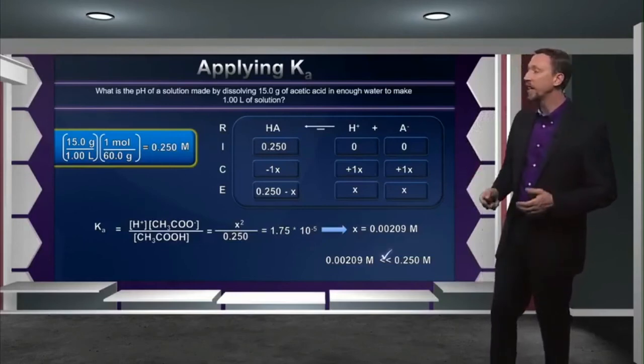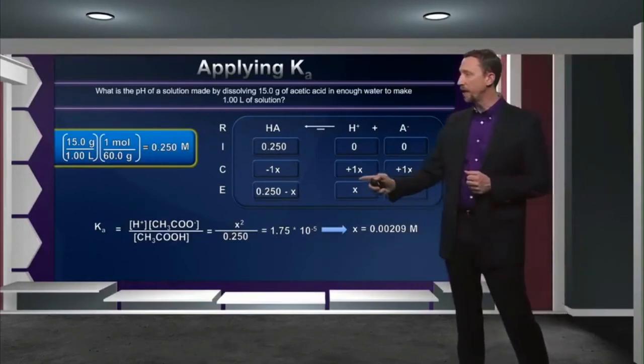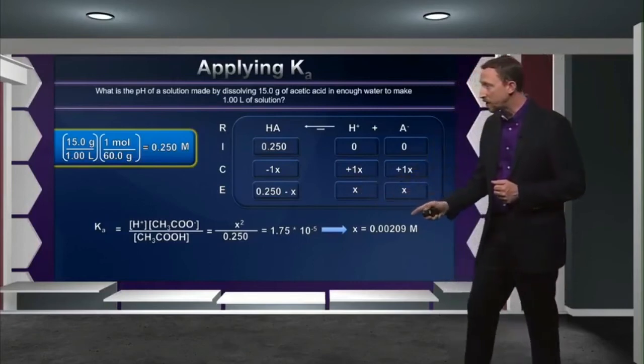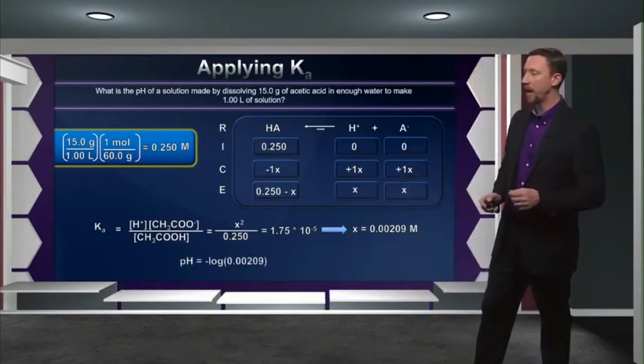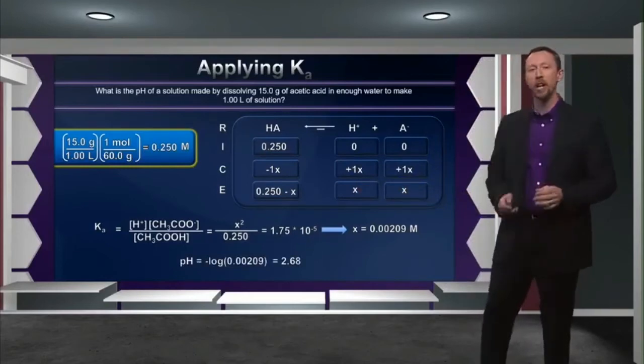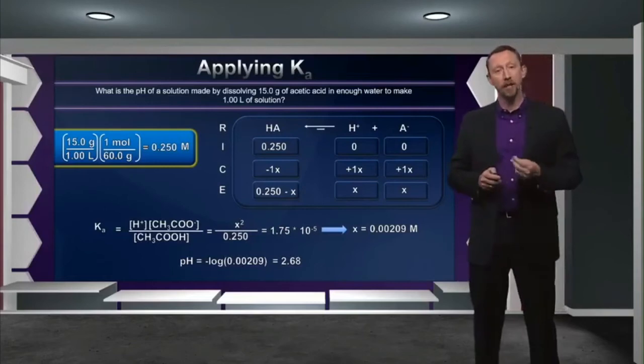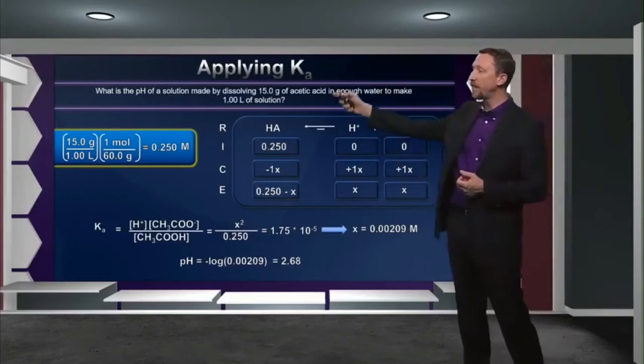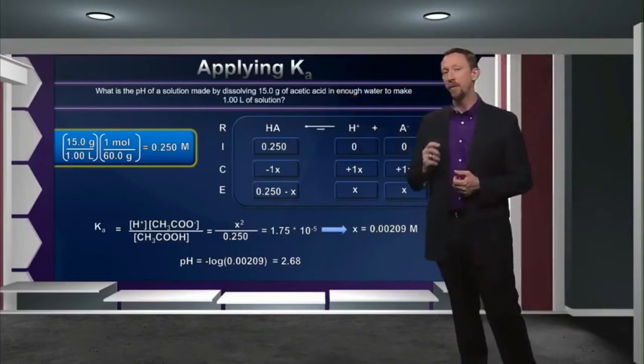The proton concentration X equals 0.00209 molar. Taking the negative log of that number gives us the pH of our final solution: 2.68 is the pH expected when we dissolve 15 grams of acetic acid in enough water to make one liter of solution. We can use the Ka value as a tool to predict exactly what pH will be achieved by a given concentration of a weak acid, because it accounts for the partial ionization of weak acids.